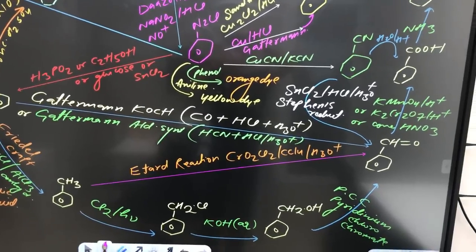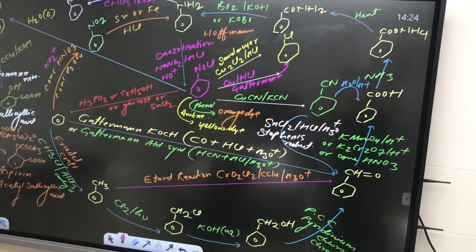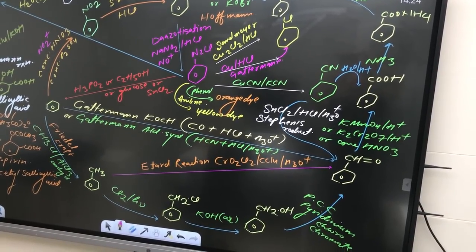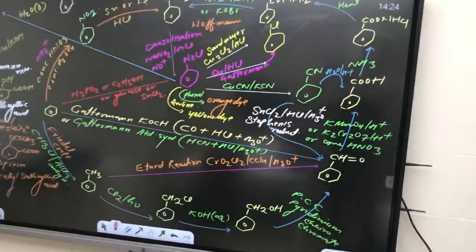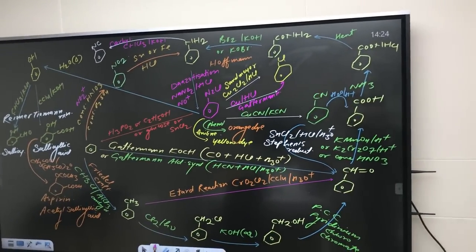And if you want to convert toluene to benzaldehyde, what you are supposed to do? Yes, what you can see? Toluene to benzaldehyde, it's an Etard reaction. CrO2Cl2. Okay, now let me tell you rest of the other things. You can see on the left-hand side, but yes, I am not going to move towards left-hand side right now.